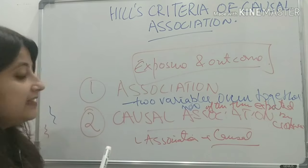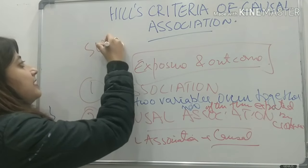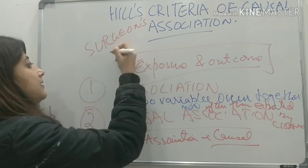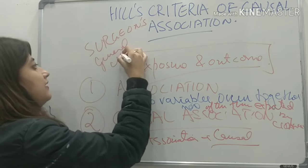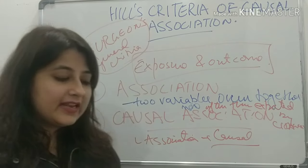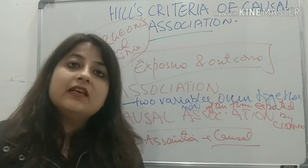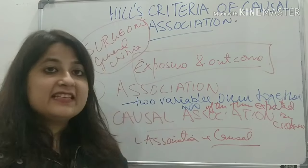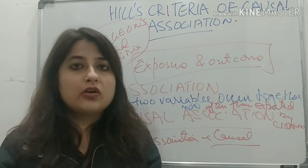Here is an MCQ point: the other name for Hill's criteria is Surgeon's General Criteria. So if you see that term, don't get confused. We will be looking at all those criteria which establish causality.